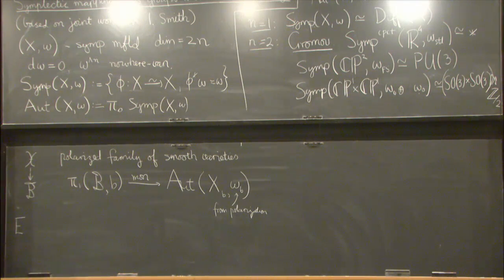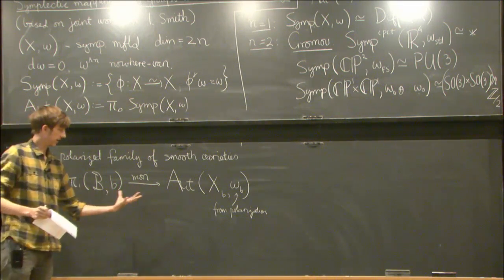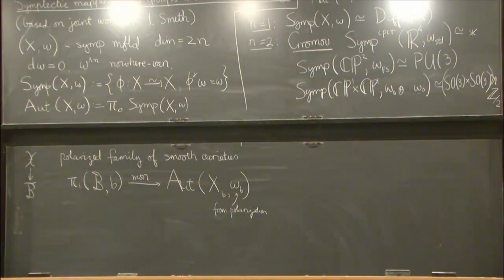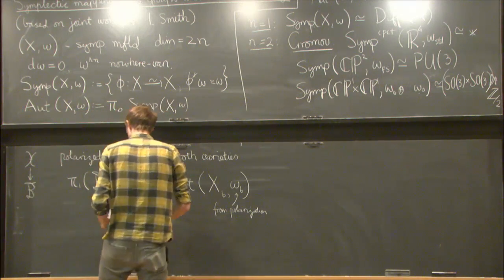So, for example, we saw this in Max's talk. If B is a punctured disk, and we can fill in the puncture with a variety with a node, then this monodromy gives us the Dehn twist in the vanishing cycle associated to that node. And Mark talked about this in his talk.